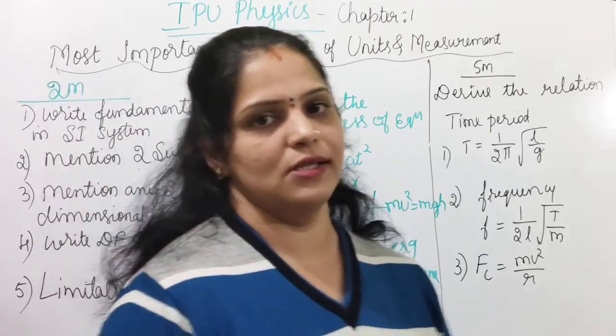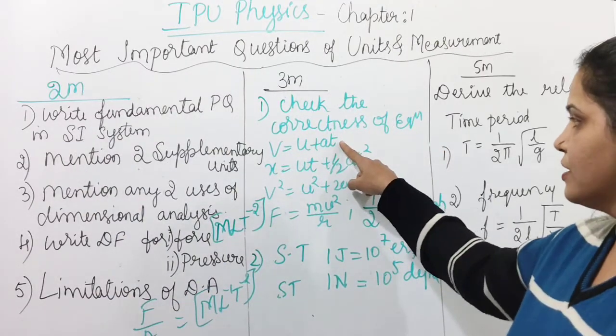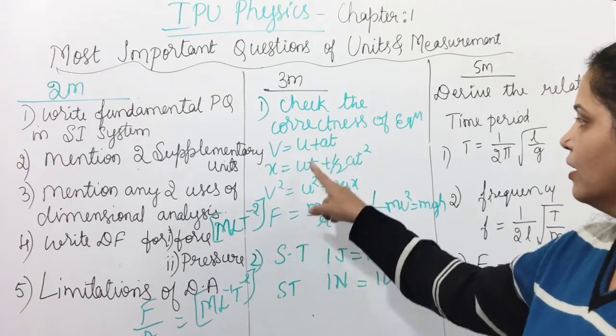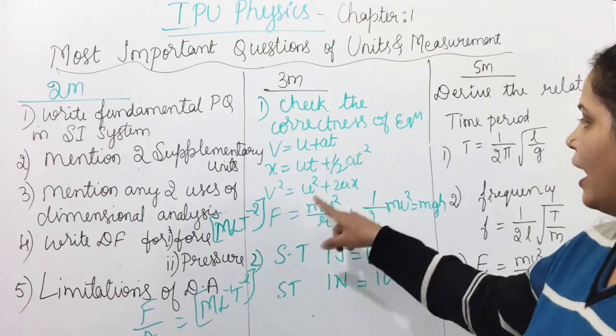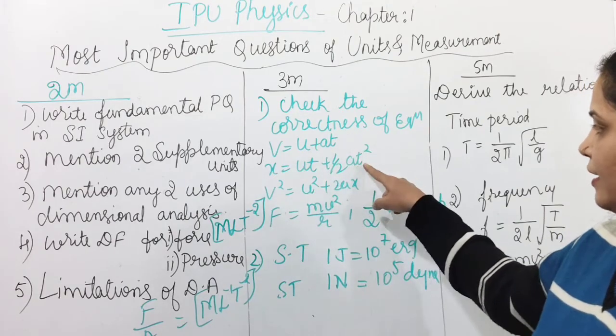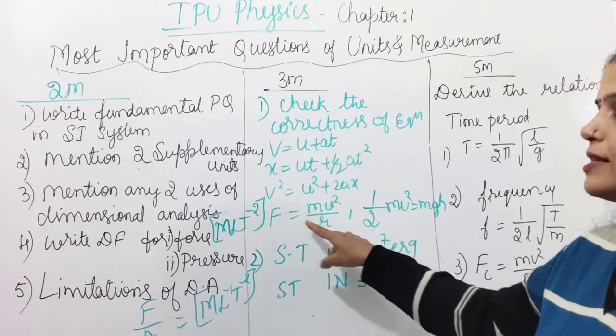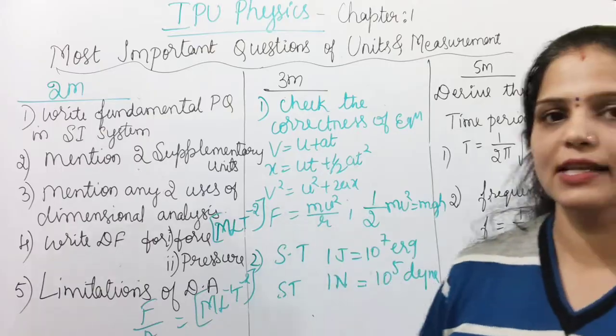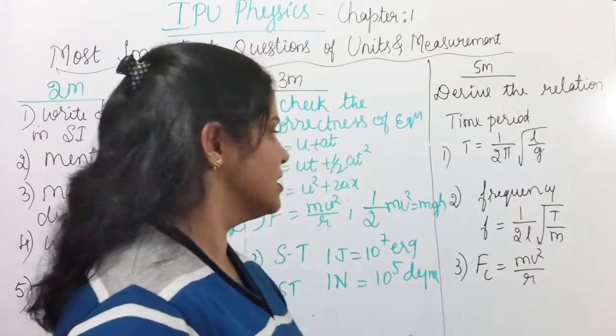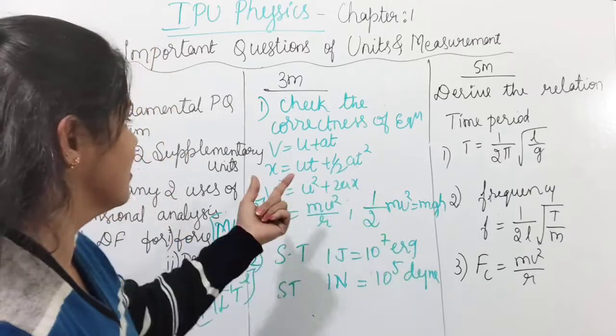Next, three mark questions. Check the correctness of equation. So the equations may be these three or these three, you know, you have studied in mechanics chapter. And this one in motion in straight line, you have studied this equation. And F is M V square by R centripetal force. And half M V square is M G H. That is kinetic energy is equal to potential energy. Checking the correctness, one of the equation you can expect for three marks.